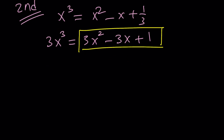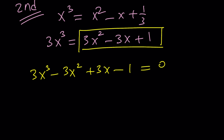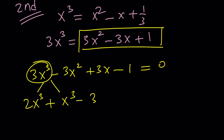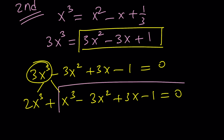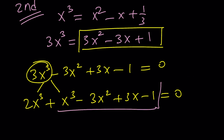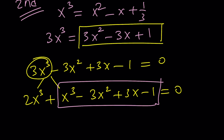Let's put everything on the same side. I'm going to go ahead and separate 2x cubed and write 3x cubed as 2x cubed plus x cubed, which is something we can do. Then write the rest of the expression — I hope this rings a bell. I'm going to go ahead and box this piece here.